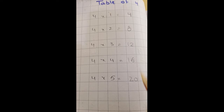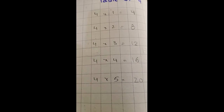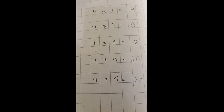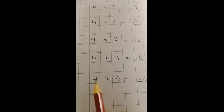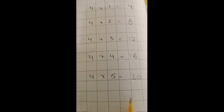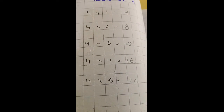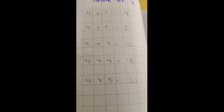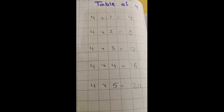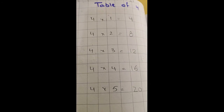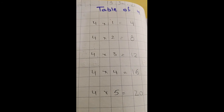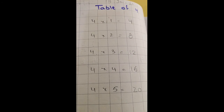4 2's are 8. 4 3's are 12. 4 4's are 16. 4 5's are 20. Theek hai, isi tarah se aap log write karenge aur read karenge. Yeh half table abhi maine karwaya hai aapki math ki copy mein. Okay.